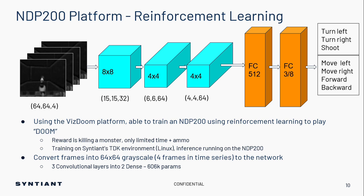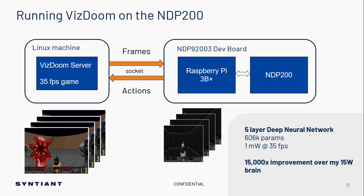We built another version of the game with eight actions including motion, along with the run-and-gun mechanics. With reinforcement learning, the NDP 200 knows nothing about the game structure at all — it just gets rewarded through playing thousands upon thousands of games. The network is 600K parameters, fits on the device, and runs at 35 frames per second at one milliwatt. We're hosting the Doom game on a Linux box, sending frames down through our dev board directly to the NDP 200 to run inference and make decisions at the required frame rate. The brain is roughly a 15-watt process — we've taken that 15-watt process and turned it into one milliwatt at the edge. That's a 15,000x improvement with the NDP 200 playing Doom.